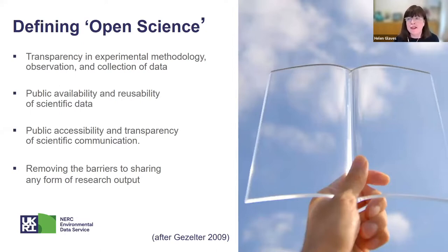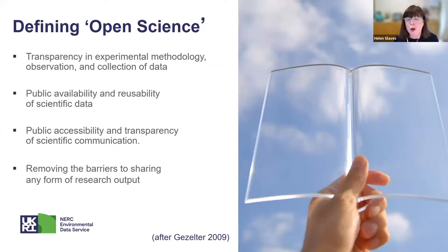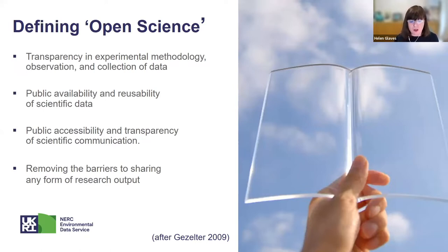More generally, open science is about methodology, observation, and the collection of data itself. It's also about public availability and reusability of scientific data and all research assets, and about the public's ability to access scientific communication. Ultimately, it's about removing barriers to sharing any form of research output to allow anyone to use those assets to support their own research.